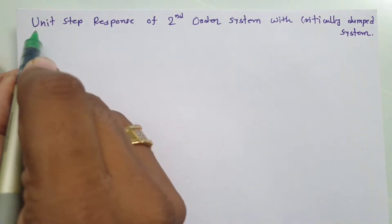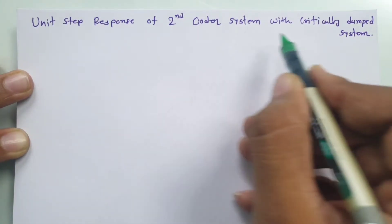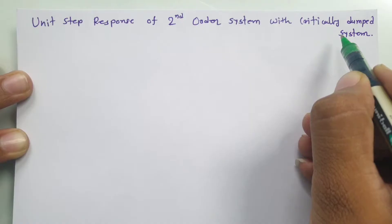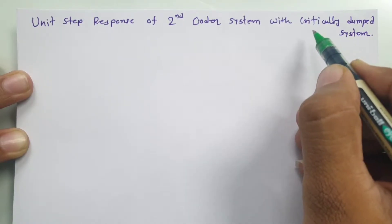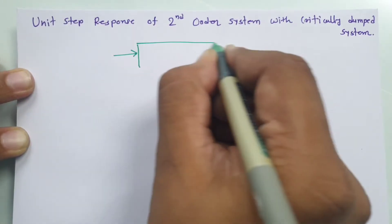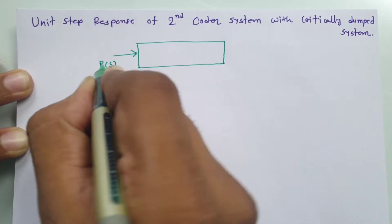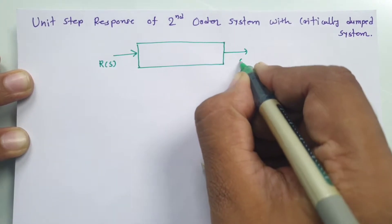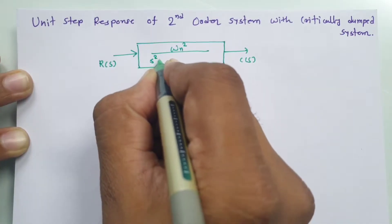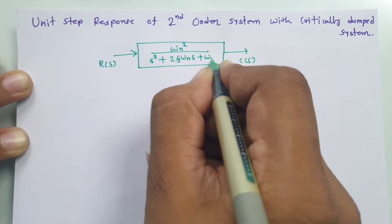Our input will be the unit step input. We are looking at the output of a second order system with the critically damped case. The standard second order system has input R(S) and output C(S), with transfer function omega_n squared divided by S squared plus 2 zeta omega_n S plus omega_n squared.